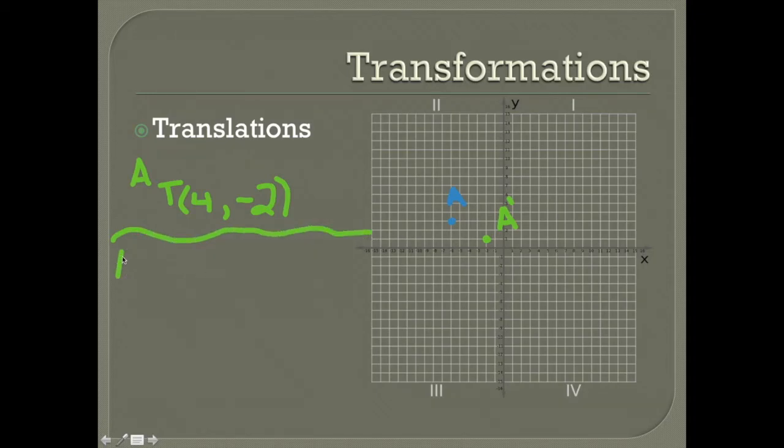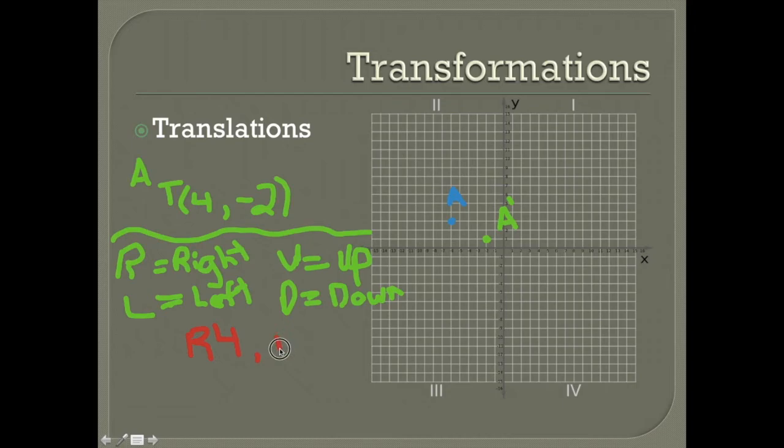Another way is using letters. So R equaling right, L equaling left, U is up and D is down. So for this one we would write we moved right four steps. So we would say that we moved R four and we moved D two. You don't have to write a negative on that. We know that if we're moving D down that's a negative. Just like if it was an L for left you wouldn't have to write L negative four. We know that moving left is a negative movement.